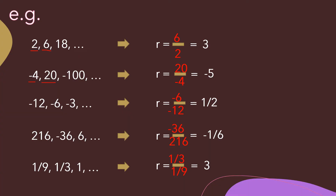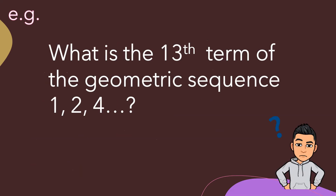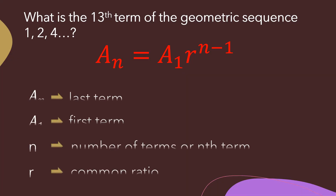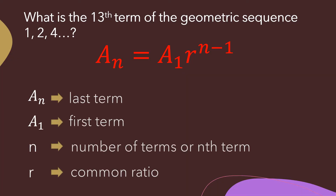Now let's see how the formula works in solving a problem. What is the 13th term of the geometric sequence 1, 2, 4? Using the formula a sub n equals a sub 1 times r raised to n minus 1, we first gather the needed information. The last term is unknown. The first term a sub 1 is 1. Since we want the 13th term, n equals 13.